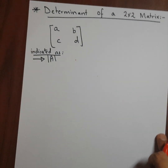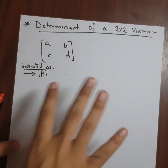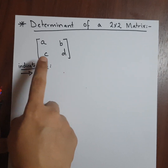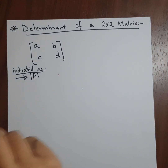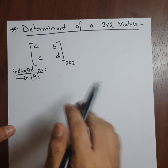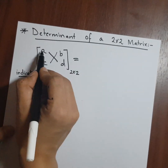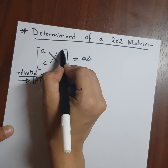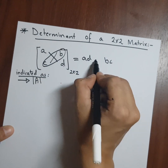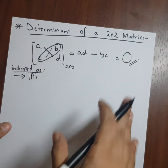Now let's talk about the determinant of a matrix — a two by two matrix to be specific. The determinant of a two by two matrix is very simple, and the determinant of any matrix is indicated by an absolute value sign. I have here a two by two matrix with elements a, b, c, d. What I'll do is cross multiply and subtract. I'll multiply a with d and multiply b with c, and subtract them, and I'll get a single scalar value which will be my determinant.